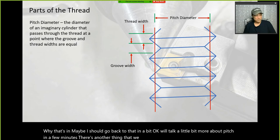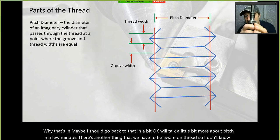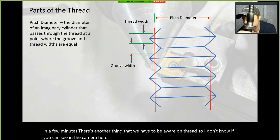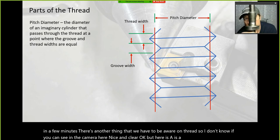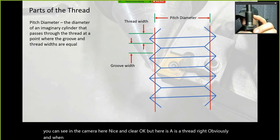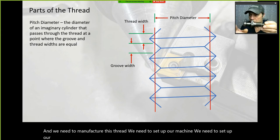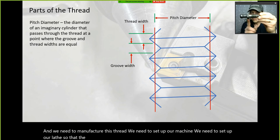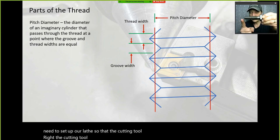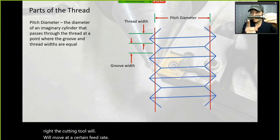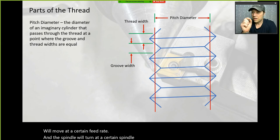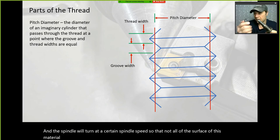When we need to manufacture a thread, we need to set up our lathe so that the cutting tool will move at a certain feed rate and the spindle will turn at a certain spindle speed, so that not all of the surface of the material is cut — we end up cutting a groove because the tool is moving fast enough to not cut the entire circumference.